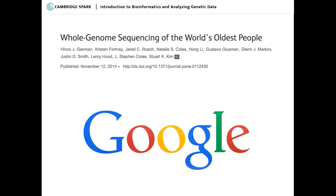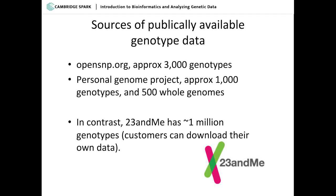Here's one final example of a genome-wide association study. Google decided they wanted to get into the genome sequencing game, and their first major project was looking for people over 110 years old and genome sequencing them — but they didn't find anything very significant in that paper. There are some sources of publicly available genotype data, though if you're looking to do one of these on your own, there's really not a lot that people have submitted themselves. There's a website called opensnp.org where you can find about 3,000 genotypes, and another called the Personal Genome Project with about 1,000 genotypes and 500 whole genome sequences. For comparison, 23andMe has one to two million people, but very few people have actually put their data online.